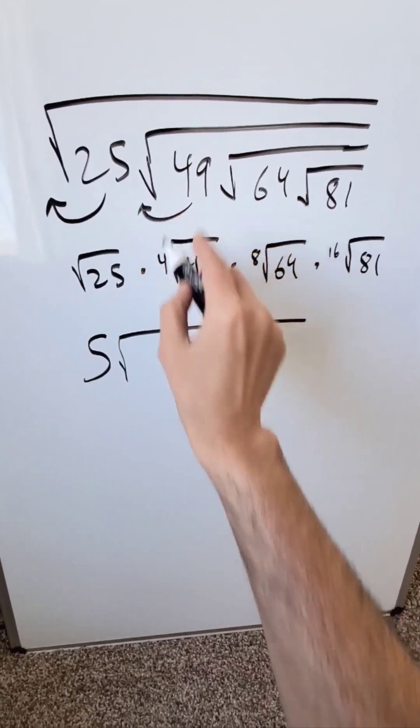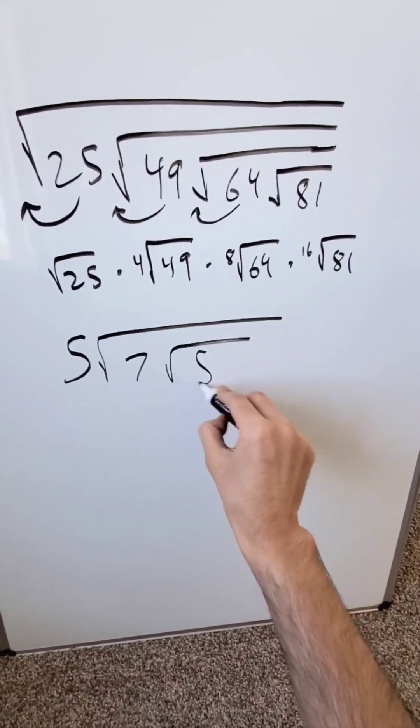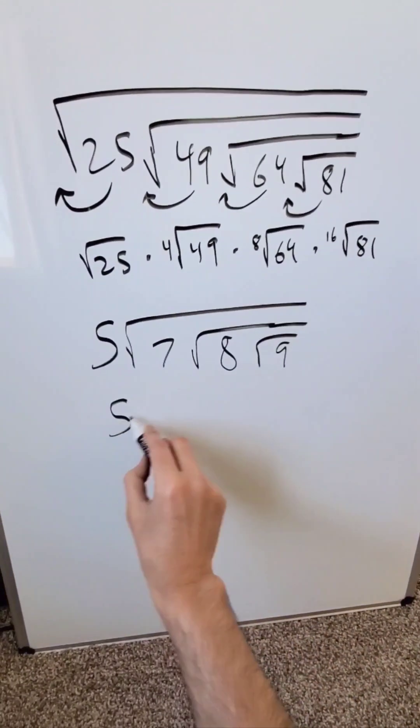The 49 can come out of its own root as a 7. The 64 can come out from its own root as an 8, and lastly 81 comes out as a 9, but you can simplify within this.